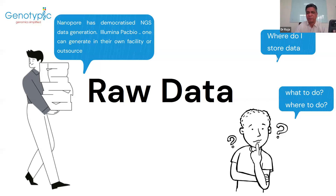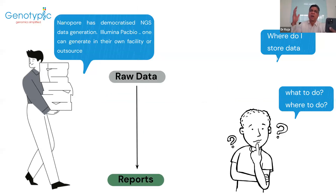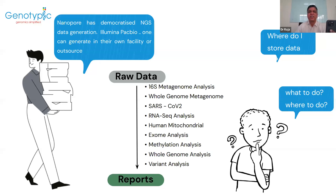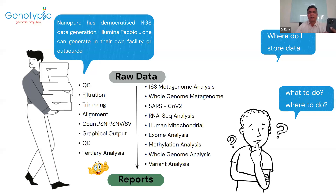Particularly during the nanopore era when you can generate data in two to three hours, why waste almost a month doing the analysis? From the raw data, for different applications, you have to do the analysis, then create a report — either for yourself or for someone else. If it's a hospital, you have to create a report or end up writing a publication. People generate raw data for a wide variety of reasons: metagenomes, whole genomes, exomes. When raw data comes in, first thing: you have to do QC — is the quantity and quality correct?